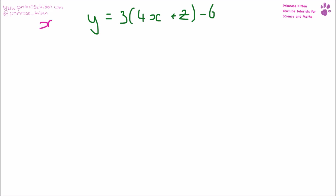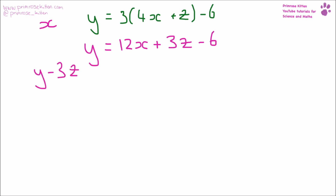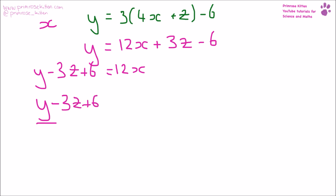Here I want to make x the subject of the formula. x is currently in brackets. The first thing I'm going to do is multiply out those brackets: y = 12x + 3z − 6. I'm going to get everything that isn't x over to the left-hand side: y − 3z + 6 = 12x. Now that I have x just times by something, I'm going to divide the other side by 12: x = (y − 3z + 6) over 12.